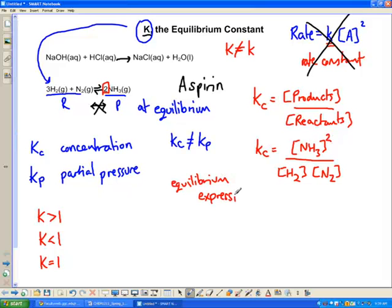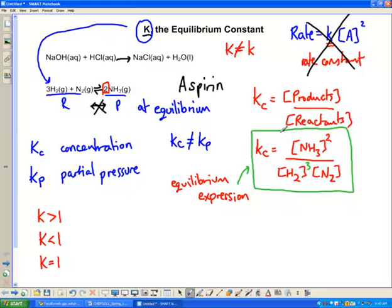The number that is the coefficient in the reaction becomes the exponent in the equilibrium expression. So I'll put a 3 here for H2. The equilibrium expression is K equals concentrations of products over concentrations of reactants — or partial pressures of products over partial pressures of reactants. A large value of K means the numerator is bigger than the denominator, so we have a higher concentration of products — the products are favored at equilibrium.